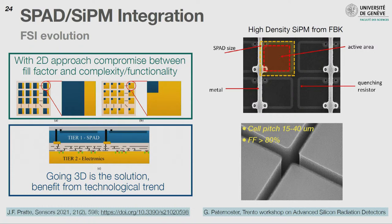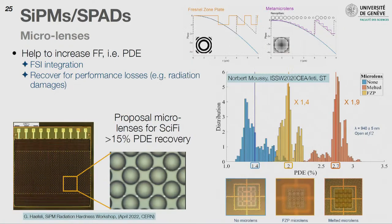FBK has been very good at decreasing trench width between microcells and decreasing TSV size to recover fill factor. Micro-lenses can partially recover photo detection efficiency losses — what was once a dream is now much more widely used. For SciPF for LHCb, where exchanging the SiPM modules is very hard or impossible, one idea is simply to coat and add microlenses, recovering 15% in PDE. This allows reducing the breakdown voltage back to an acceptable DCR level while maintaining the same photo detection efficiency.